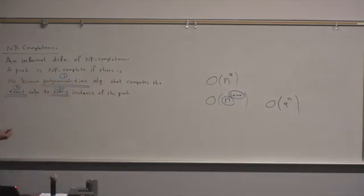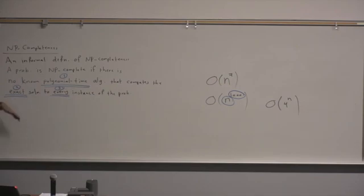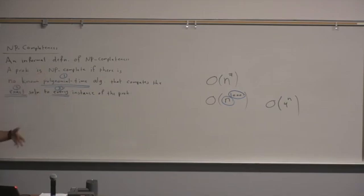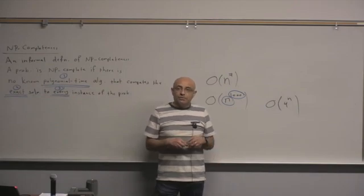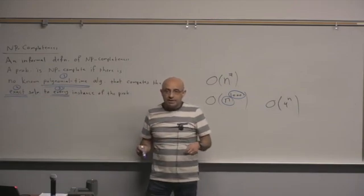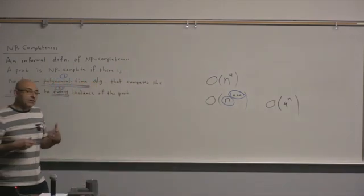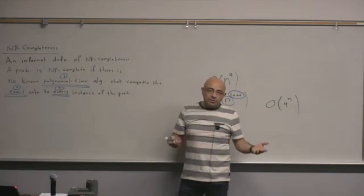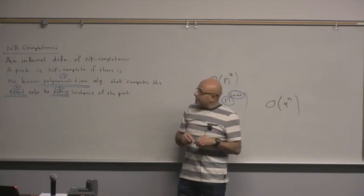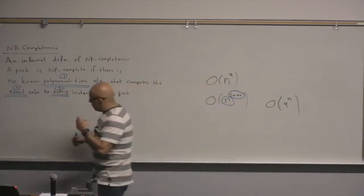If a problem is NP-complete, there is no polynomial time algorithm for exact solutions to every instance, but there may be an exponential or factorial time algorithm. The brute force solution to NP-complete problems is usually exponential if you're looking for a combination, and factorial if you're looking for a permutation or ordering.